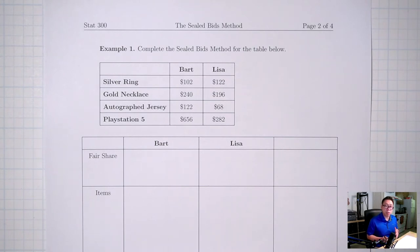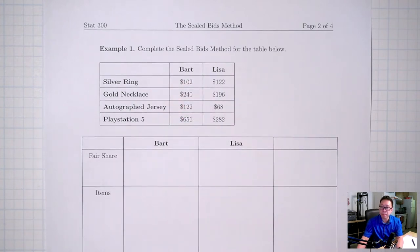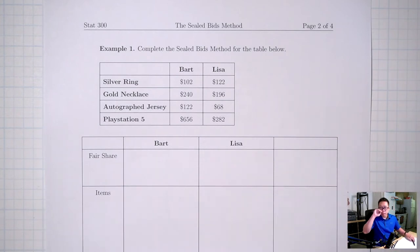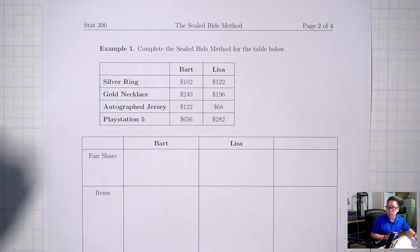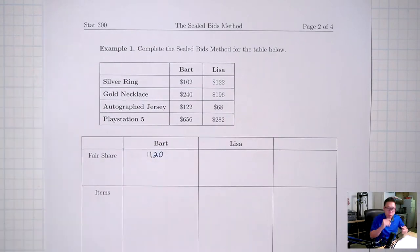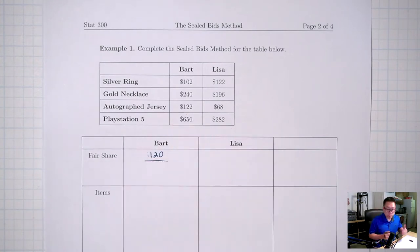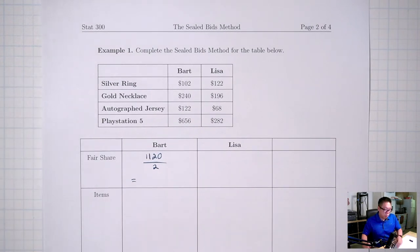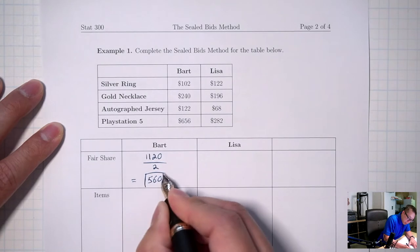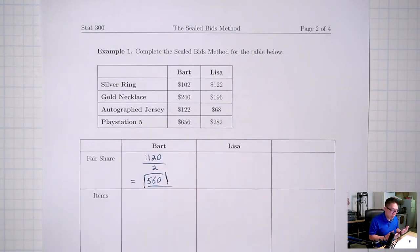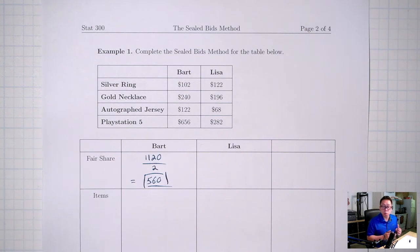The first step is to figure out each person's fair share. For each person, we total up the value of the items. For Bart: 102 + 240 + 122 + 656 = 1,120. We're sharing between two people, so divide by two: 1,120 ÷ 2 = 560. In Bart's eyes, all the items are worth $1,120, and he deserves half — so he deserves $560 worth of items.